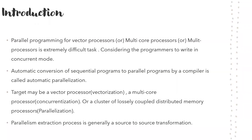Starting with the introduction, parallel programming for vector processors, multi-core processors, or even multi-processors is an extremely difficult task. For example, with four cores we can have four threads. We can even have 10 threads if the processor speed is good enough, but the issue is managing all these 10 threads is an extremely difficult task considering the communication and the sharing of data structures. It is not easy for programmers to code in the concurrent mode. This is where automatic parallelization takes place.